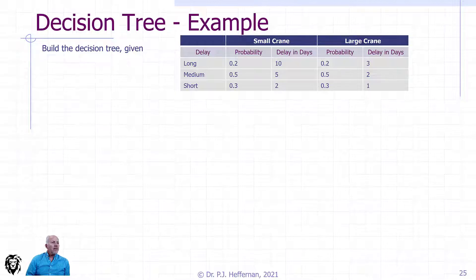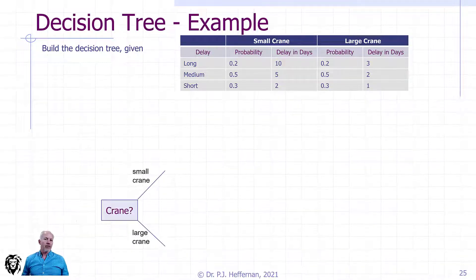So let's build it out. This is the same table we had on the last slide, and we're going to build our decision tree. We start with our decision, and we have to choose between the small crane or the large crane, and we branch off into the two different directions.